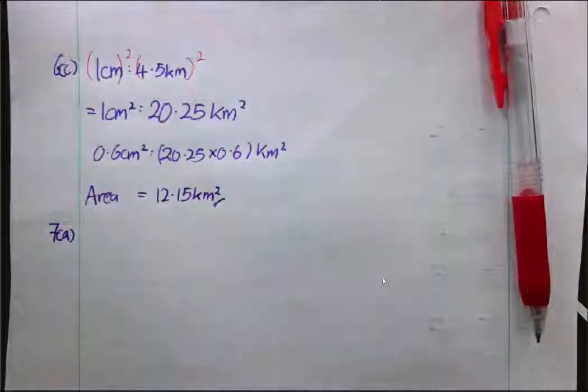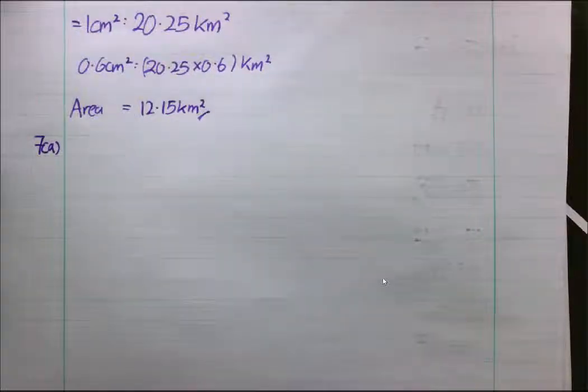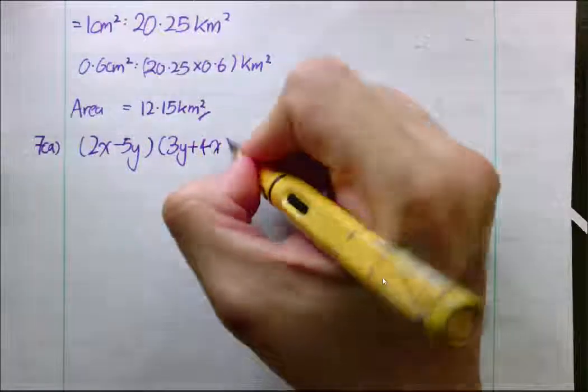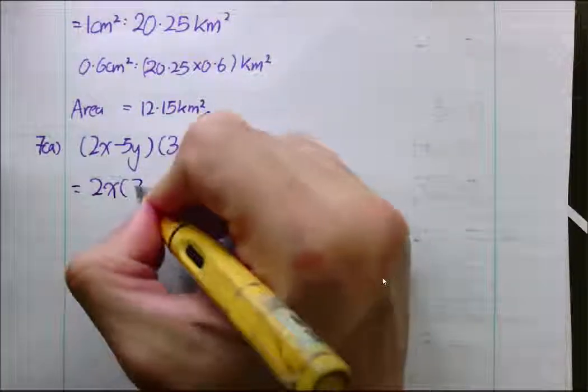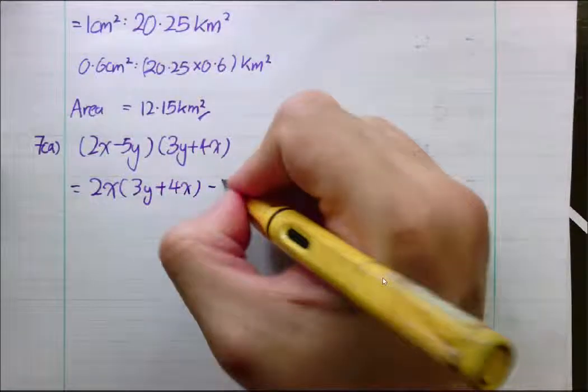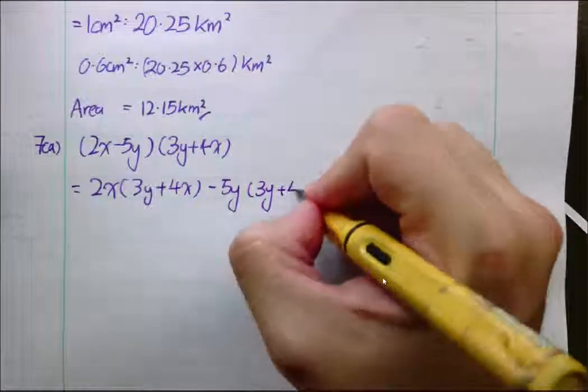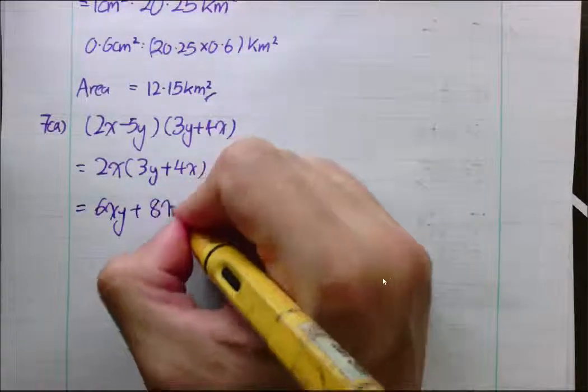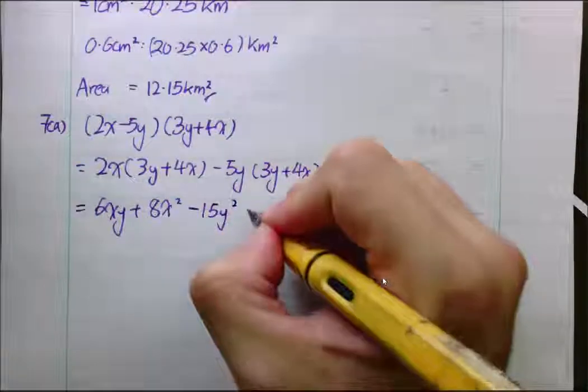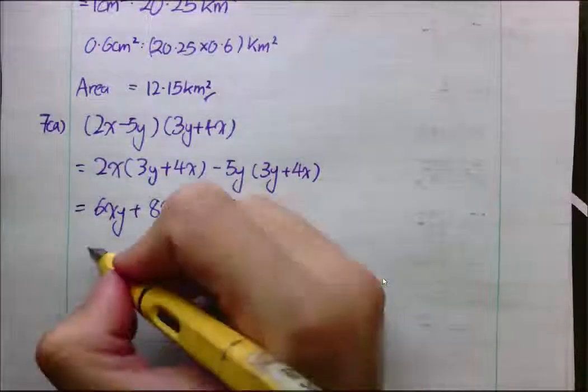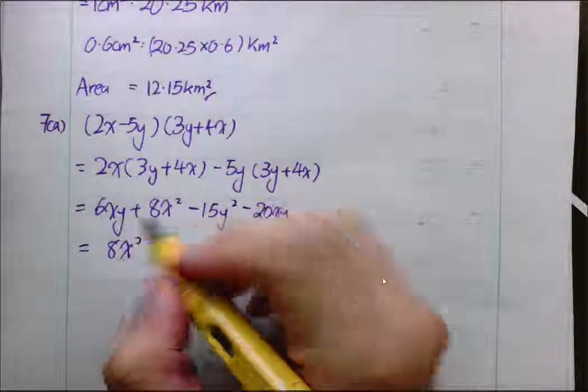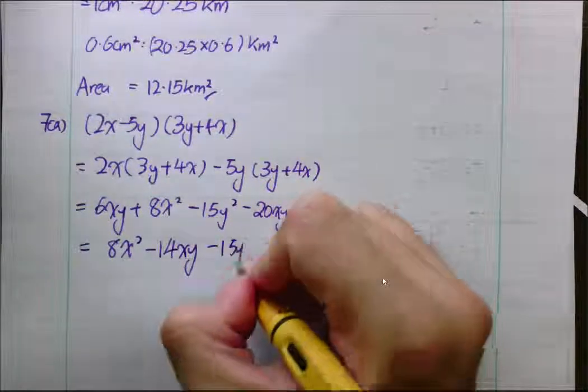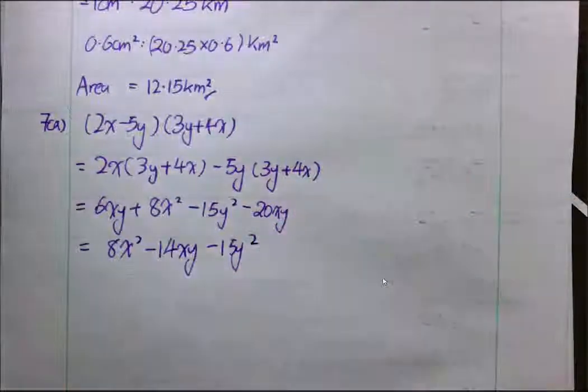And that is 6c. Now, quickly, we move on to 7a itself. 7a works like this. What we have is (2x - 5y) multiplies to (3y + 4x). Then we have 2x multiplies to 3y plus 4x. And we have negative 5y multiplying to 3y plus 4x as well. So, what we get is 6xy + 8x² - 15y² - 20xy. Simplifying, 8x² minus 14xy minus 15y². All simplified there.